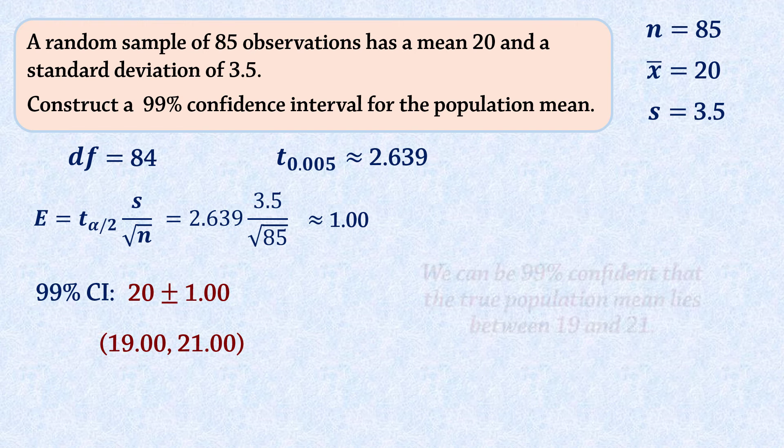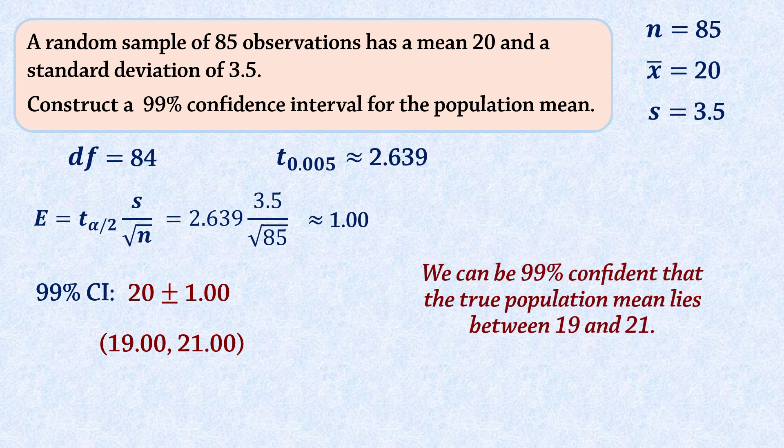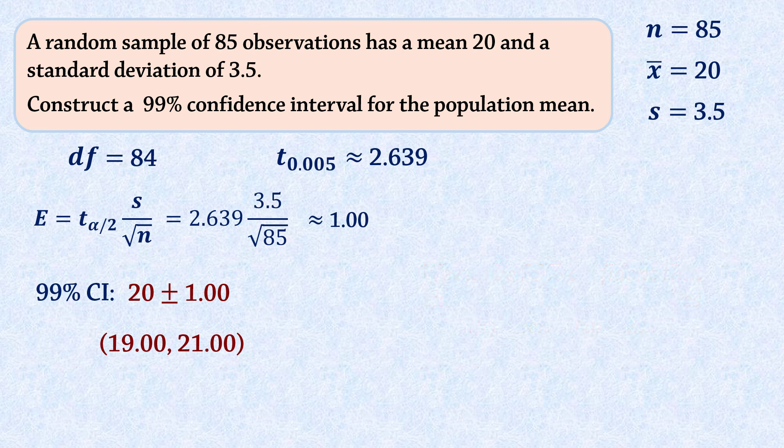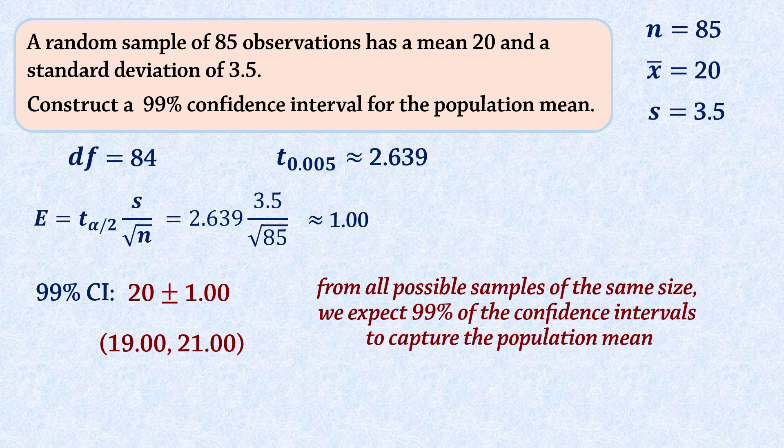That is, we can be 99% confident that the true population mean lies within this interval. Again, this means that if all possible samples of 85 are taken from the same population, we expect 99% of the confidence intervals constructed from them to capture the true population mean within their interval. This interval constructed here is just one of those many intervals.